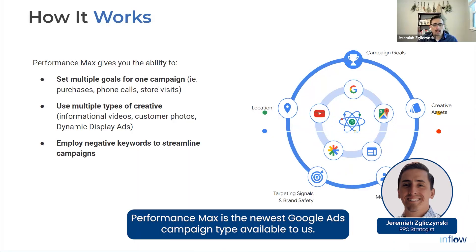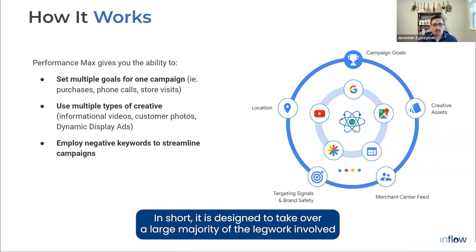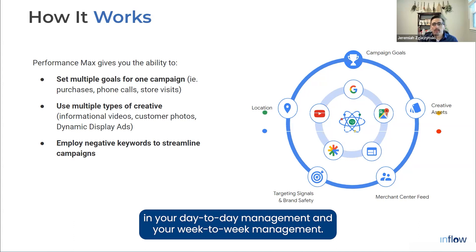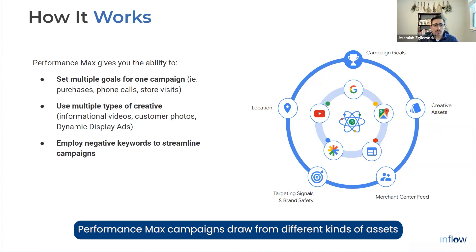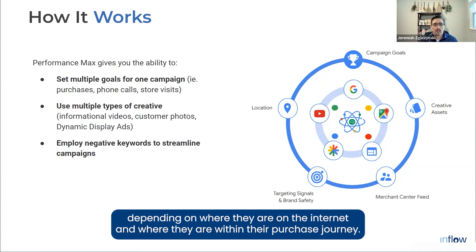Performance Max is the newest Google Ads campaign type available. In short, it is designed to take over a large majority of the legwork involved in your day-to-day and week-to-week management. Performance Max campaigns draw from different kinds of assets and use real-time data to create the best possible ad for each prospect, depending on where they are on the internet and within their purchase journey.